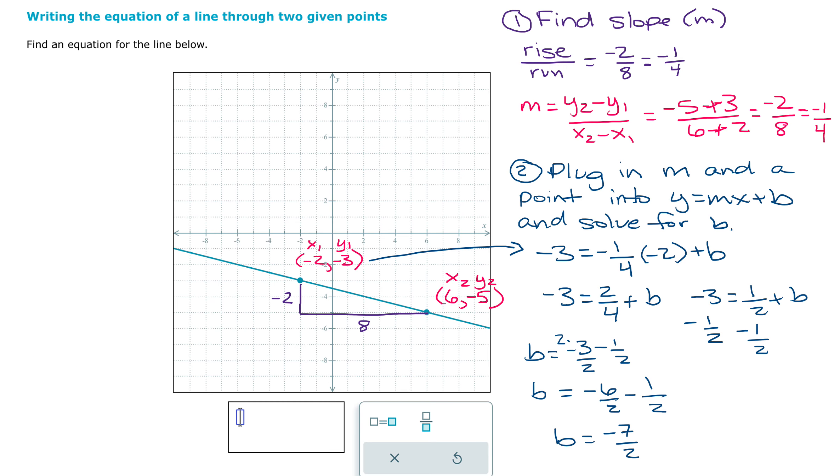So then when I enter my equation, it's going to be entered here in this box, y equals negative one-fourth. Plug that in for m. And plug in the b that I found of negative seven over two.